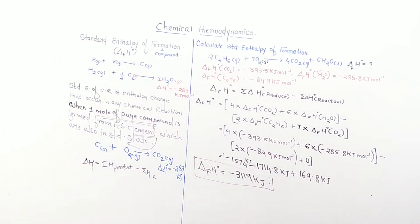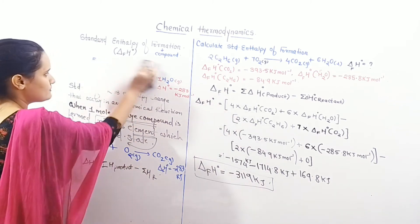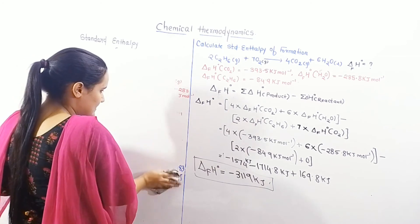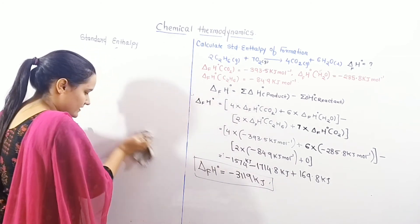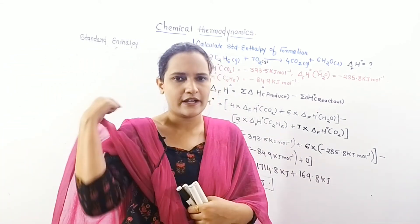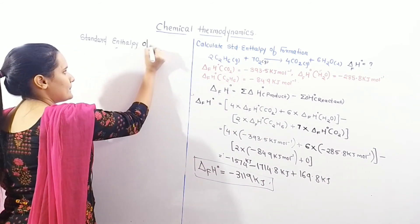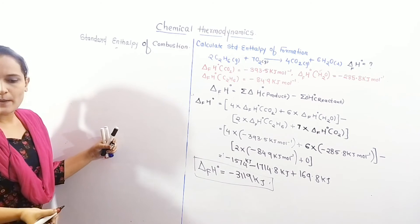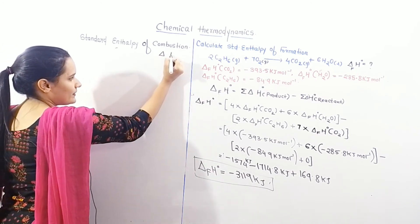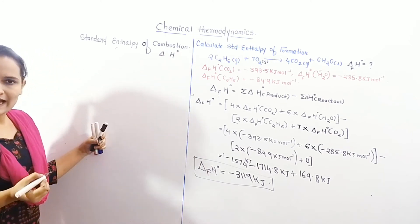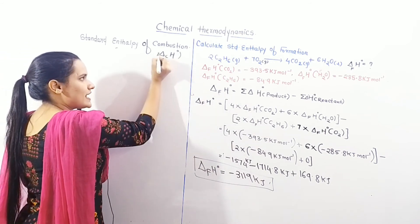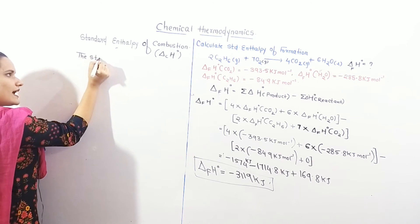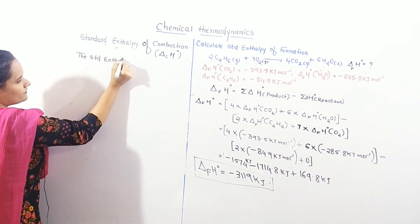Now we will see standard enthalpy of combustion, which is the last type of standard enthalpy we are covering. We first understood what standard enthalpy is, then we studied formation. Now we look at standard enthalpy of combustion. Its representation is delta_c H naught — where 'c' stands for combustion.